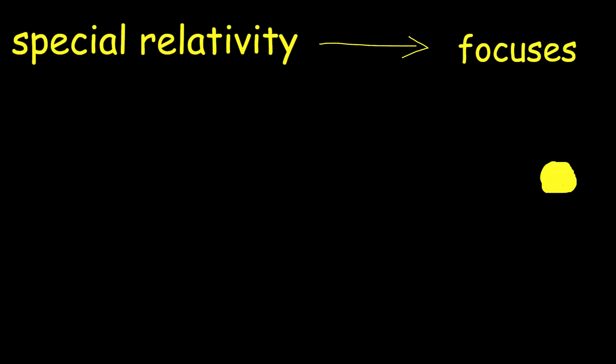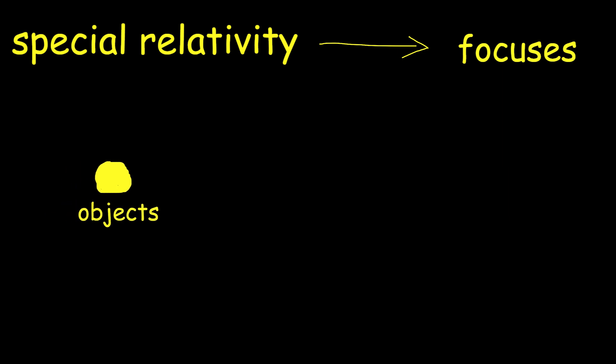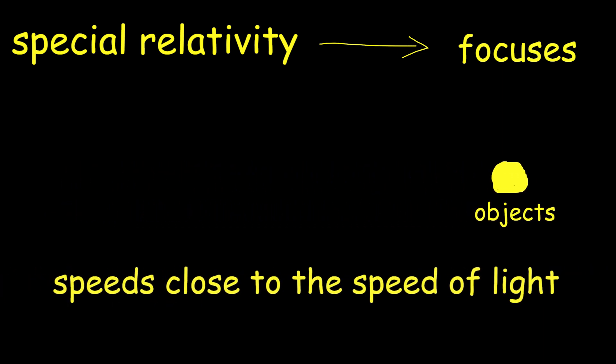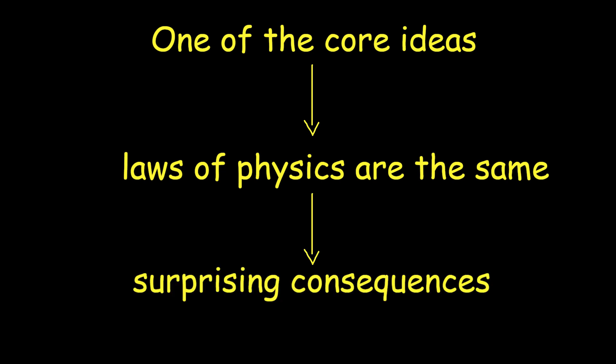Special relativity focuses on the physics of objects moving at constant speed, particularly those moving at speeds close to the speed of light. One of the core ideas is that the laws of physics are the same for all observers, regardless of their constant speed. This principle leads to some surprising consequences.